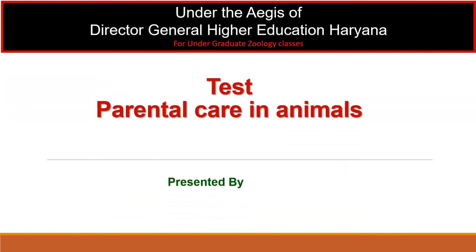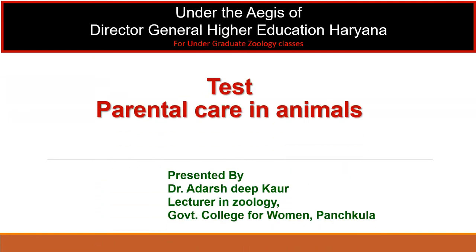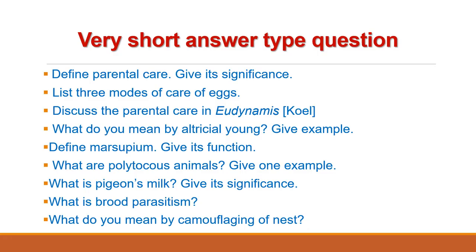Hello students, this is the unit test for Parental Care in Animals. The first category of questions are very short answer type. Question one: Define parental care, give its significance, and list three modes of care of eggs. Discuss the parental care in Eudynamis, that means the koel. Next: What do you mean by altricial young? Give an example.